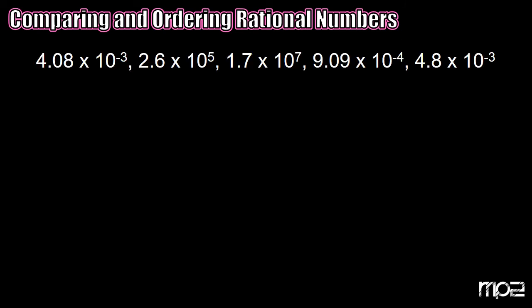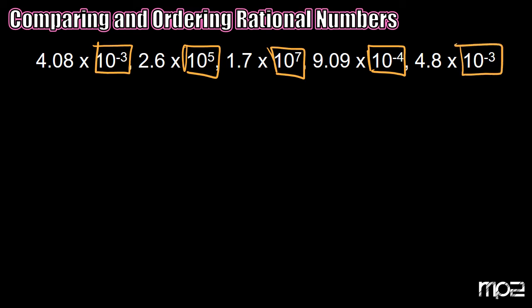Let's take a look at this example. For this video we're just going to look at numbers written in scientific notation. We have five numbers written in scientific notation. To help, I'm going to highlight all of the powers of 10, which gives me a starting point. We're going to compare these numbers in ascending order, meaning least to greatest.